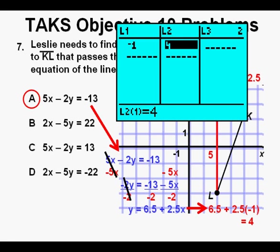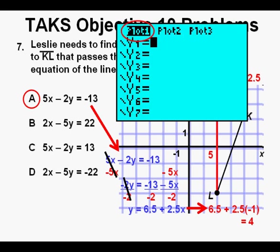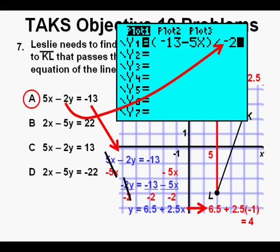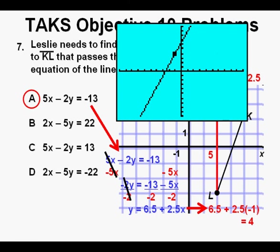Alternatively, we can check it out in our graphing calculator as well. Go to StatEdit and enter the point with the negative 1 under L1 and the 4 under L2. Then we go to the y equals view and make sure that our plot 1 is activated. Then we enter the equation, solving for y as we go. First open a parenthesis. Then enter the constant on the right side of the equation, negative 13. Next, subtract 5x. Then close the parenthesis. And finally divide by the coefficient of y, negative 2. Press graph. The graph of the line goes through the point negative 1 comma 4 and looks like it has the same slope as line segment KL, confirming our answer choice A.